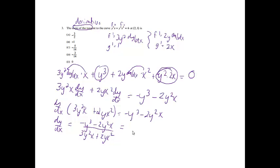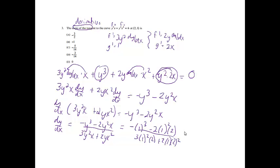Plugging in x = 2 and y = 1: the numerator is −1³ − 2(1²)(2) = −1 − 4 = −5. The denominator is 3(1²)(2) + 2(1)(2²) = 6 + 8 = 14. So dy/dx = −5/14, which is choice C.